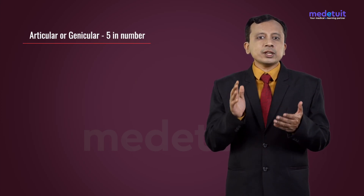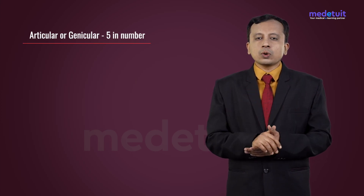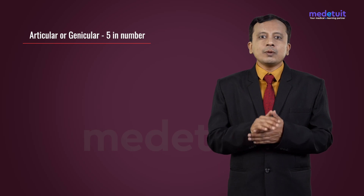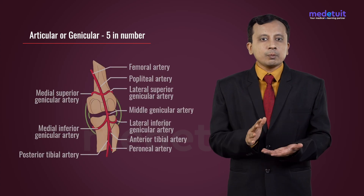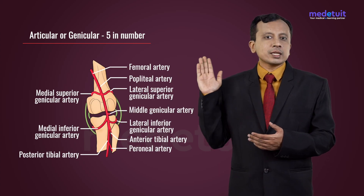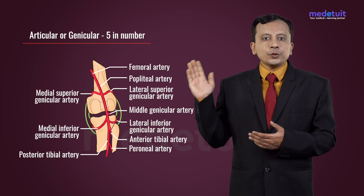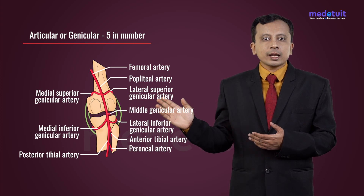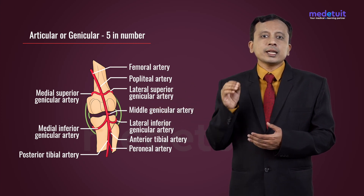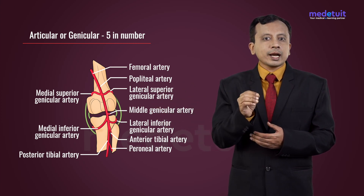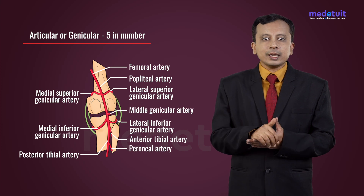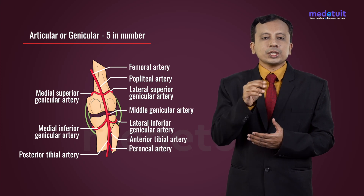The genicular branches, also called articular branches, are five in number: superior medial genicular, superior lateral genicular, inferior medial genicular, and inferior lateral genicular. There is one more genicular artery called the middle genicular artery, which arises from the center.